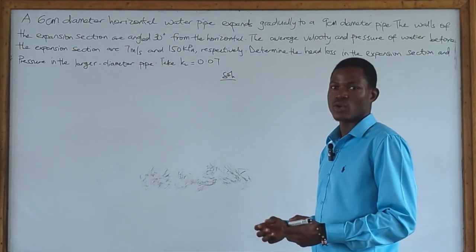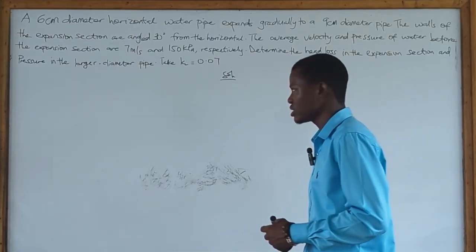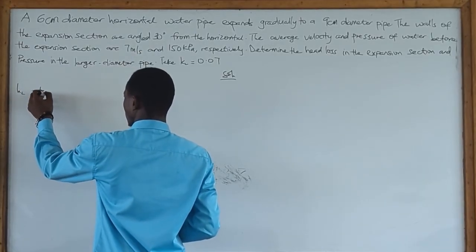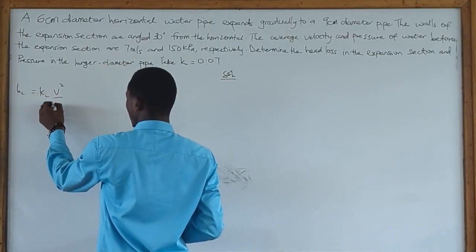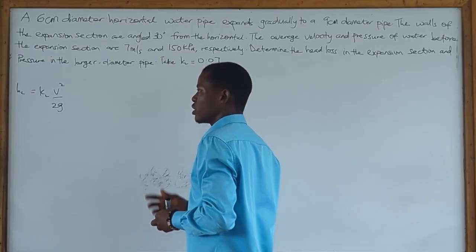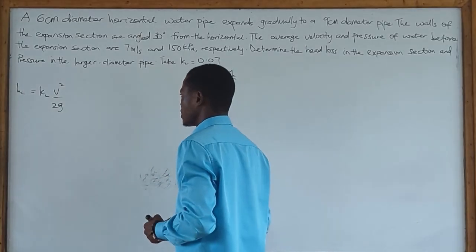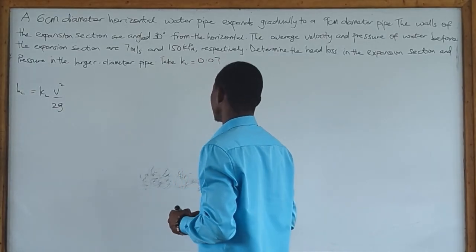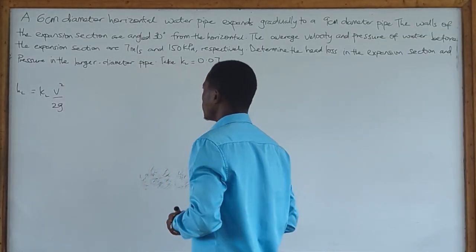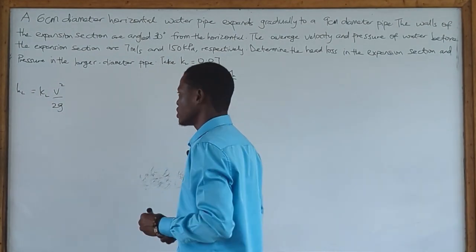This loss coefficient is a minor loss. To calculate for the head loss, we know the formula to be HL equal to KL V squared over 2G. This is the formula to calculate for the minor loss. We know our KL is 0.07, which is the same as the resistance coefficient. We know our velocity V1 to be 7 meters per second, and we know our acceleration due to gravity.